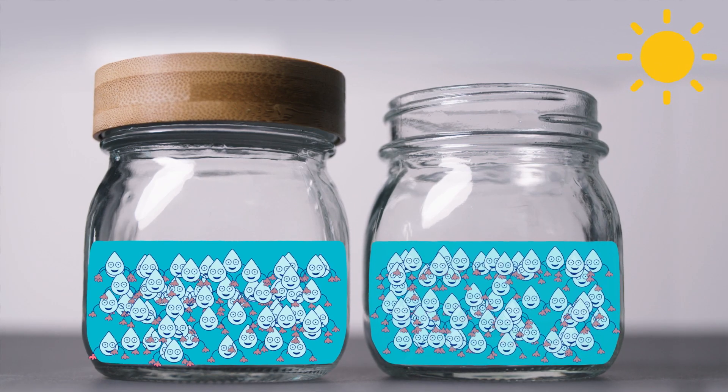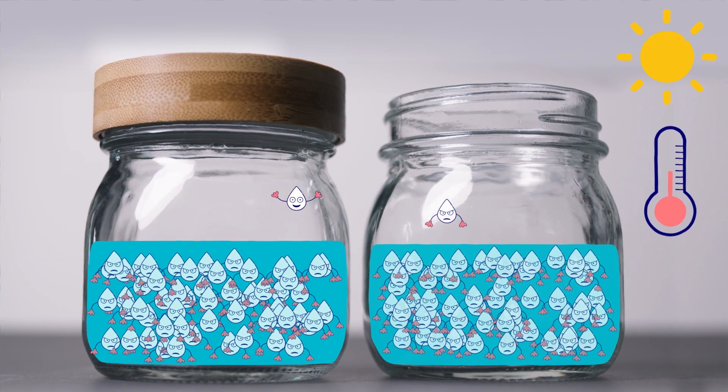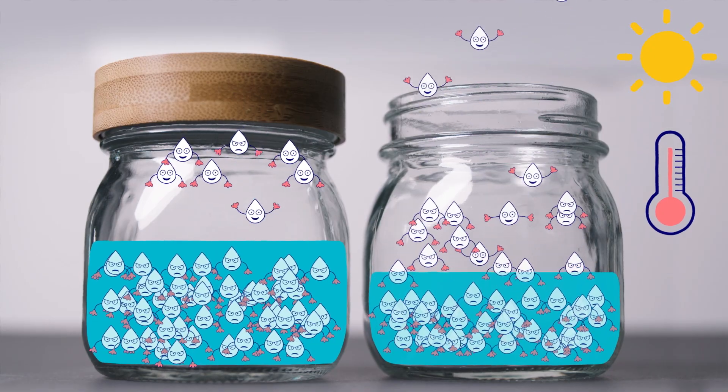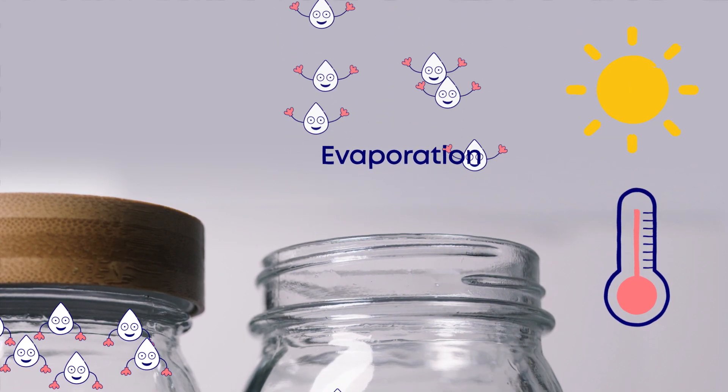Water is made up of squillions of water molecules. When heated, they don't like to be close together. As the sun heats the water, they move apart and rise into the atmosphere as a gas called water vapour. This is called evaporation, leaving less water in the jar.